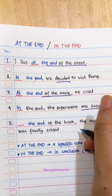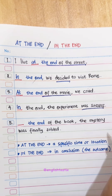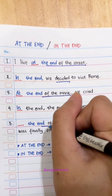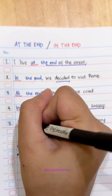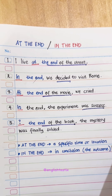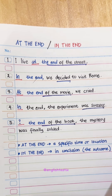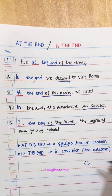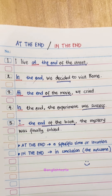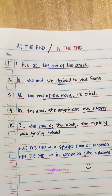The last one: '___ the end of the book, the mystery was finally solved.' The keyword is 'end of the book' — a specific time. Now it's your turn to answer in the comments below: 'in the end of the book' or 'at the end of the book'? Thank you for watching. If you find this video useful, please like and subscribe to my channel. Take care, bye bye!